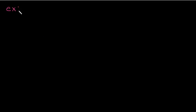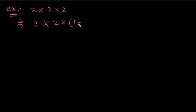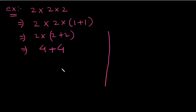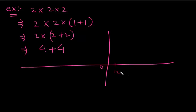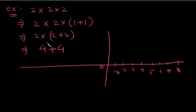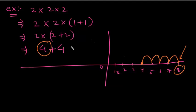Let's take one more example: 2 into 2 into 2. You can write this as 4 plus 4. So going on the number line, you are at number 4. Now if you want to add plus 4, you move 4 steps ahead and arrive at number 8. So the answer is 8.